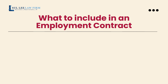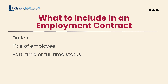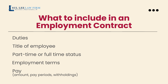For example, some of these include the duties of the employer and the employees, which often includes the consequences for any actions and what constitutes a breach of that contract, the title of the employee as well as the employee's job duties, whether the employee is part or full-time, the employment terms including whether an employee is at will or is to be employed for a certain period of time, and their pay including the amounts, pay period, and any withholdings.